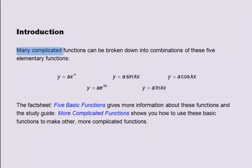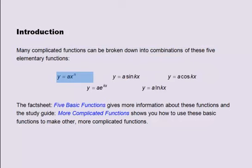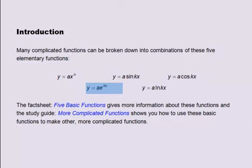Introduction: Many complicated functions can be broken down into combinations of these 5 elementary functions. The power function, y equals ax to the power n. The sine function, y equals a multiplied by the sine of kx. The cosine function, y equals a multiplied by the cosine of kx. The exponential function, y equals a multiplied by e to the kx. And the natural logarithm function, y equals a multiplied by the natural logarithm of kx.